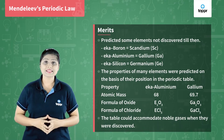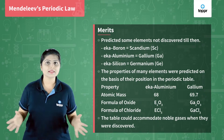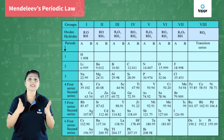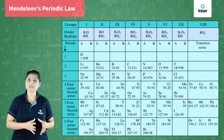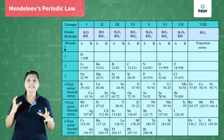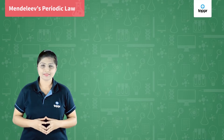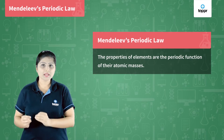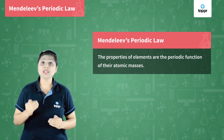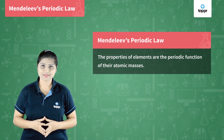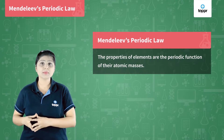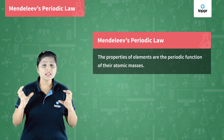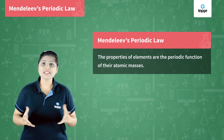The noble gases that were found out later could easily be accommodated in this table because noble gases do not react with either oxygen or hydrogen, so they could be easily accommodated in a separate column. This table was established in the year 1869, and Mendeleev's periodic law states that the properties of the elements are the periodic function of their atomic masses. That means if you arrange the elements according to their atomic masses, we will find that elements having similar chemical properties can be found after a certain interval.